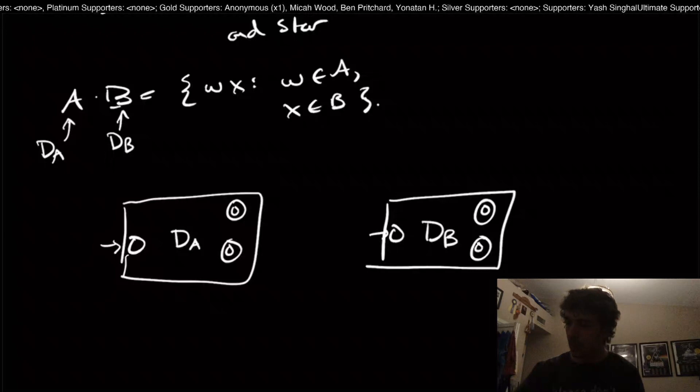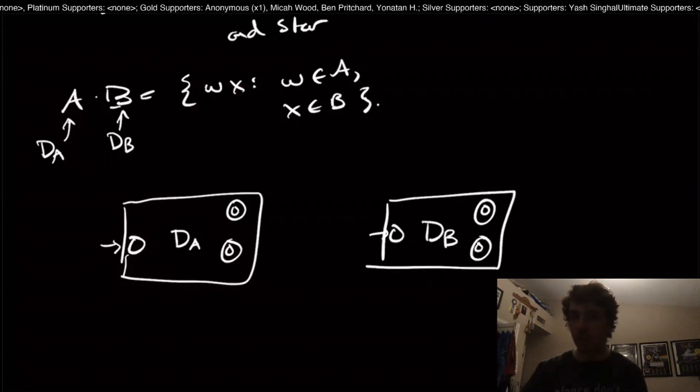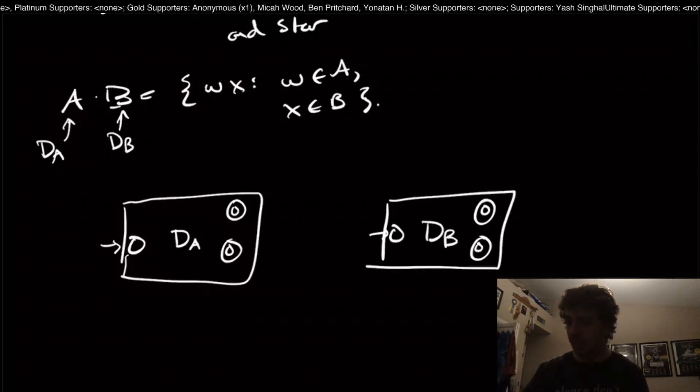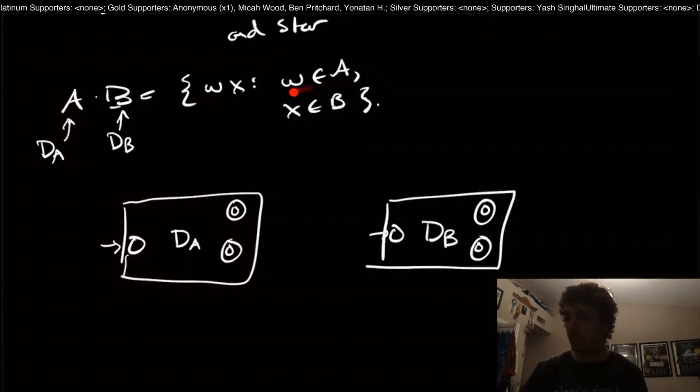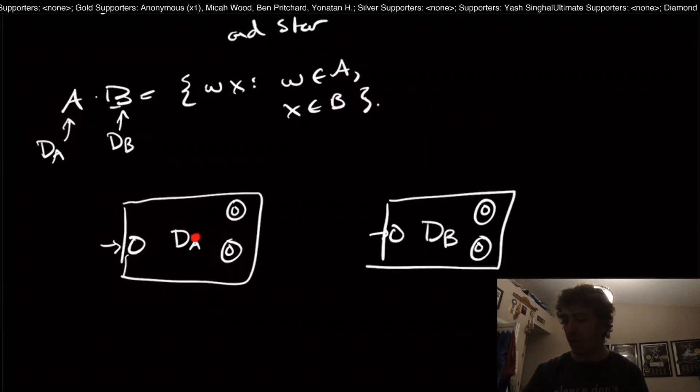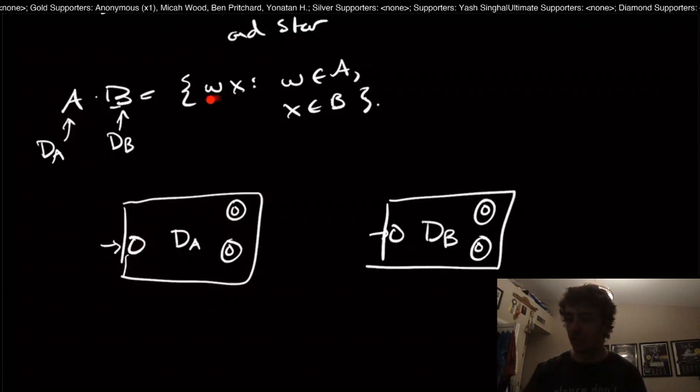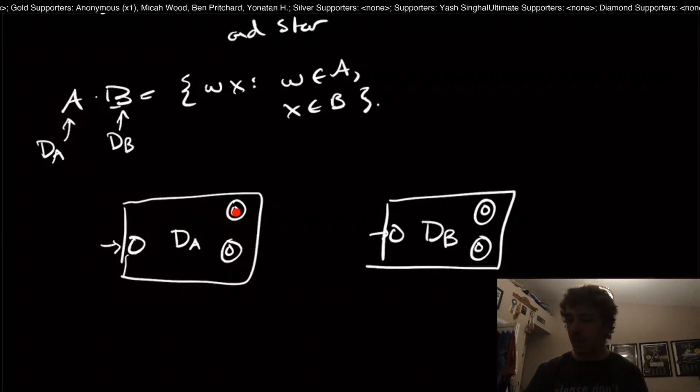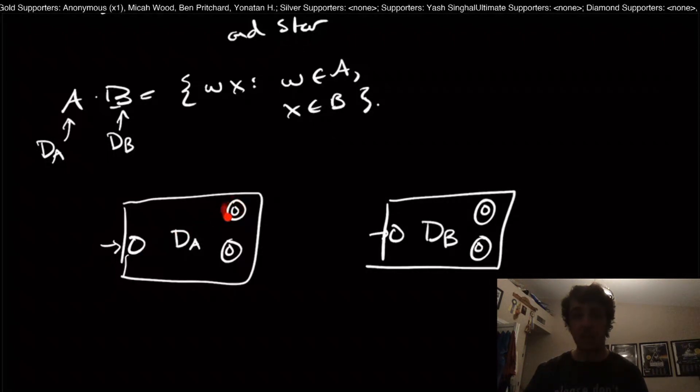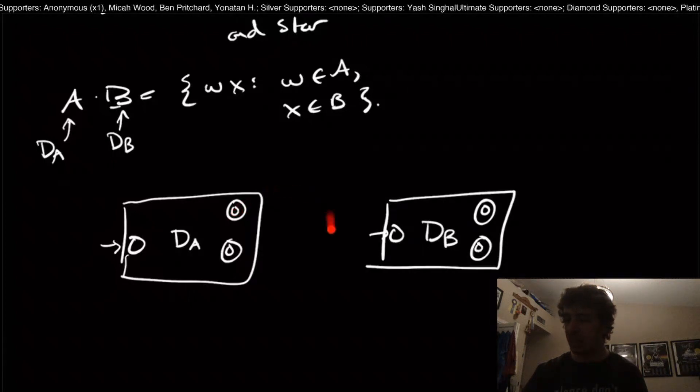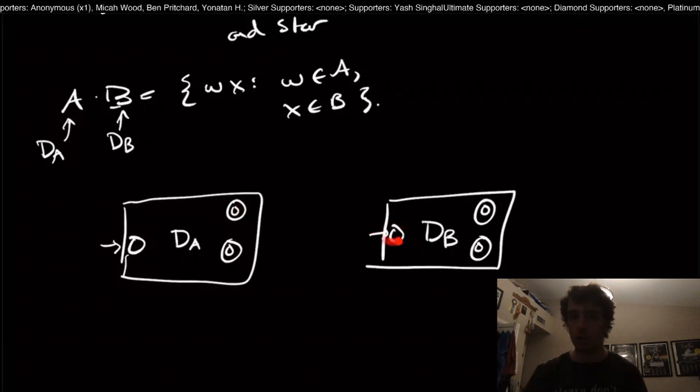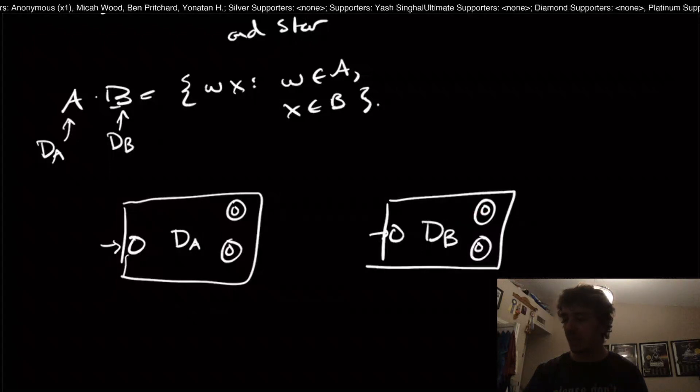In order to get the concatenation language, we discussed last time that because the string W comes first and that's the one that's in A, we need to read some string that is in the language A, which means that the DFA D sub A accepts this string W. That means we need to come to one of the final states because the DFA accepts it, and then somehow instantaneously jump over to here to be able to go through this DFA.